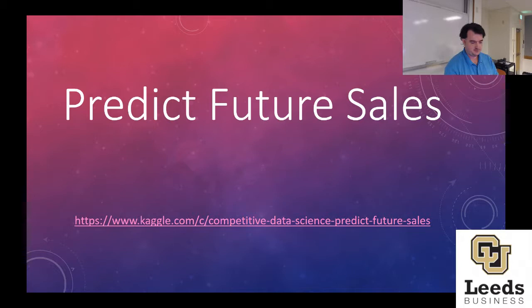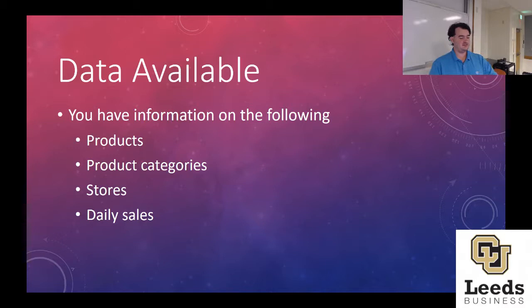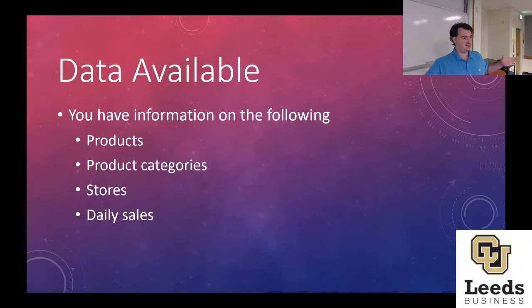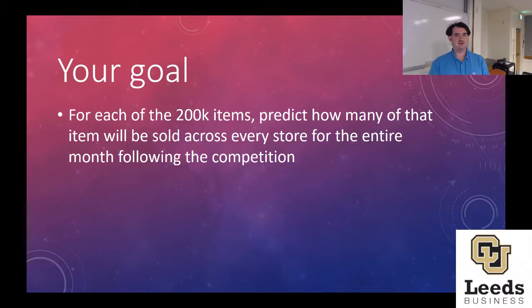There is a link to it in this PowerPoint. You have information on products, product categories, stores that could sell products, and what the daily sales are for a big long chunk of time. Your goal is to predict for one specific store what the total number of sales will be for 30 days after the competition ends, for every single product on the list. You cannot independently train a model for each because there are 200,000 products, so it's not terribly realistic.